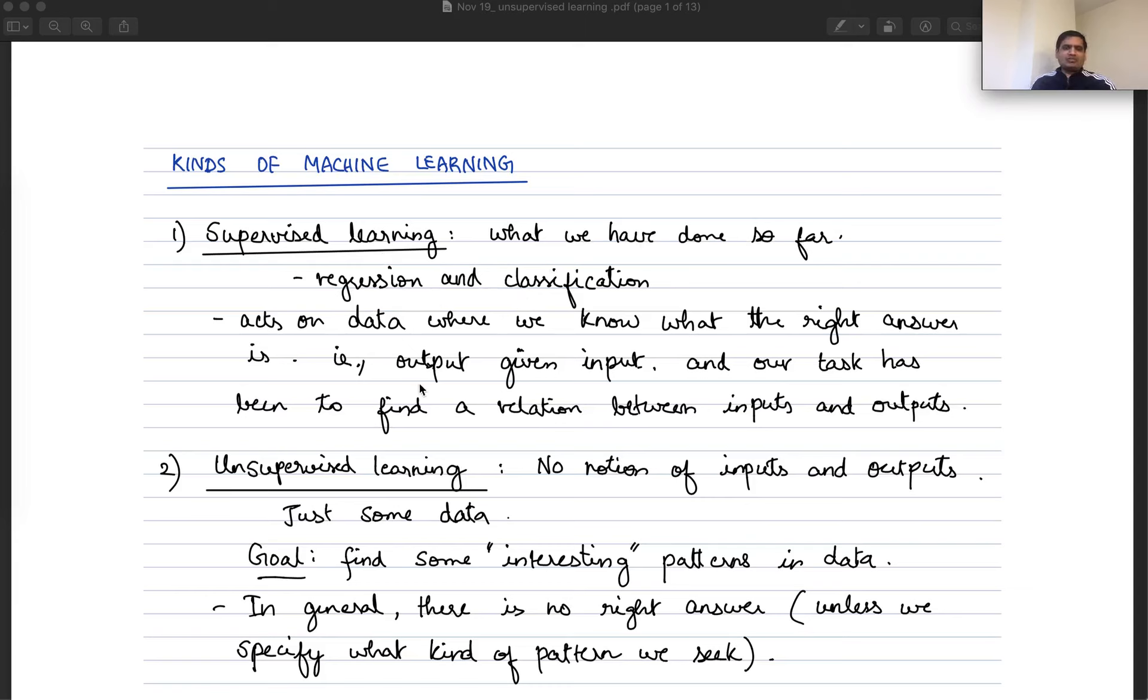Both of these have the flavor of there is some output given some input. And if you view the output in the data as the right answer for some input, then what we have been doing is constructing some kind of a function that takes us from inputs to outputs, which may be continuous vectors in the case of regression or discrete categories in the case of classification. So that's supervised learning.